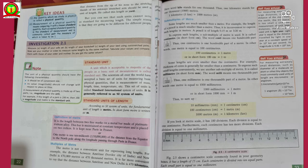Standard unit: A unit which is acceptable to majority of the people as a basic unit of measurement is called standard unit. The scientists all over the world have accepted a basic set of units for measuring basic physical quantities, that is measurement of mass, length, time, temperature, etc. This set of units is called standard international system of units. It is generally referred to as SI units, SI system of units.